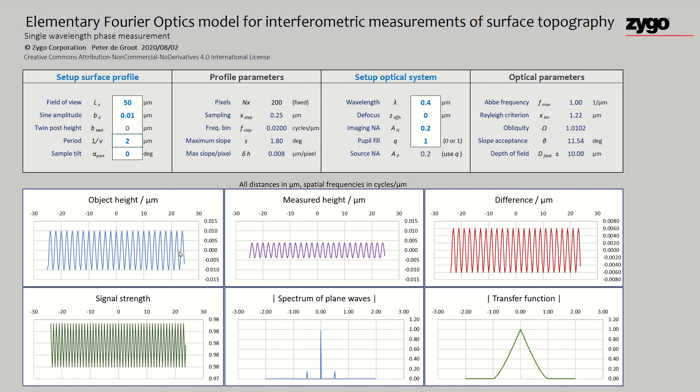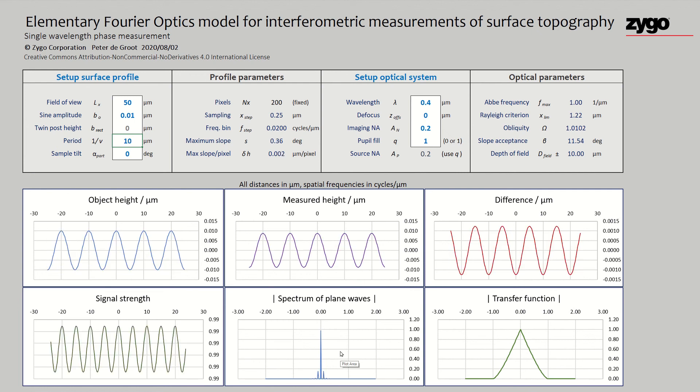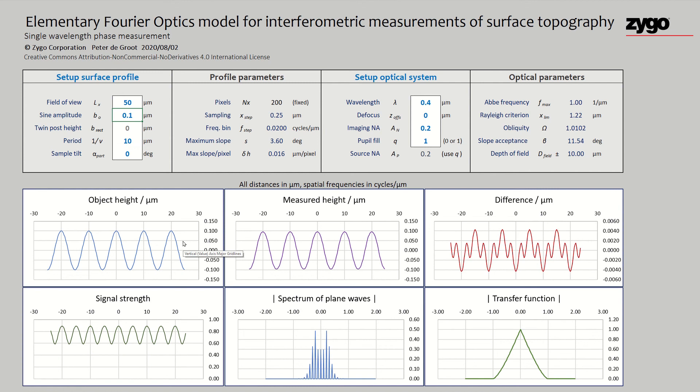If we change this period to 1, then we now have gotten to the edge and we don't see anything. So that's well understood. Let's go back to our original signal with the measured height now looking good. Let's change the amplitude instead of the period. We've changed now to 100 nanometers. At 100 nanometers, we've got a good strong measurement result. It looks almost identical to the original, even better than when we had the smaller amplitude.